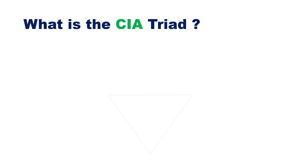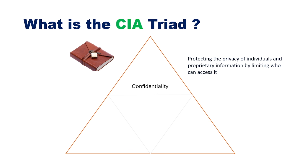So what is the CIA Triad? First up: confidentiality. It's all about keeping secrets secret. Imagine you have a diary — you wouldn't want someone snooping through it, right? Confidentiality ensures only the right people, like you, can access your information.